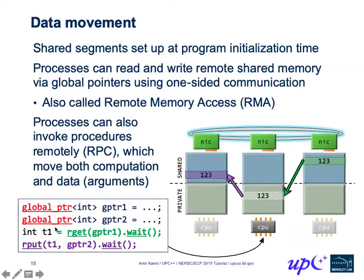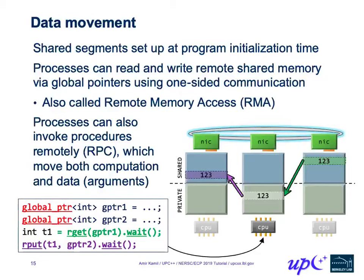At program startup, the UPC++ and GasNet layers set up shared segments on each process. Processes can then communicate global pointers to each other, and once you have a global pointer to another's memory, the process can do a one-sided put or get, referred to as remote memory access or RMA. The middle process doing a get on its right-hand neighbor illustrates that it doesn't involve the remote CPU. The resulting value is then used to do a put on another global pointer pointing to the left-hand neighbor.